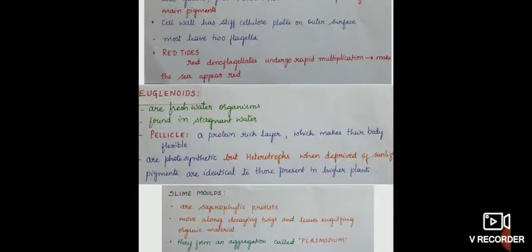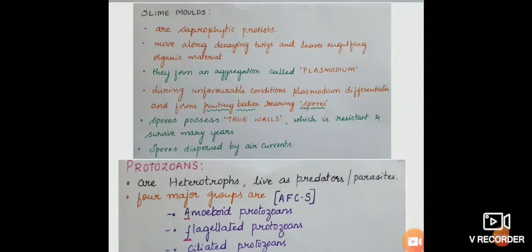Slime molds are saprophytic protists. They move along decaying twigs and leaves engulfing organic material. Plasmodium is an aggregation which these slime molds form. During unfavorable climatic conditions, the plasmodium differentiates and forms fruiting bodies which bear structures called spores. These spores have true walls which are resistant to chemicals and can survive for many years. These spores are dispersed by air currents.